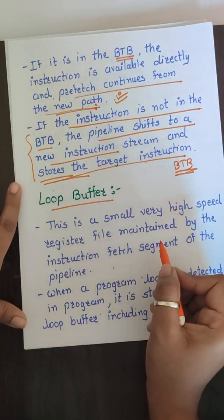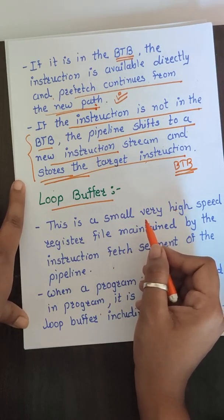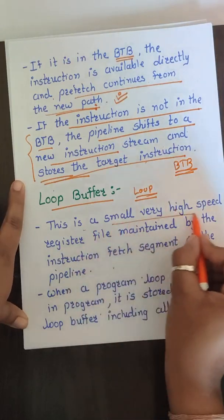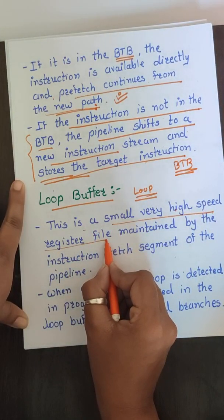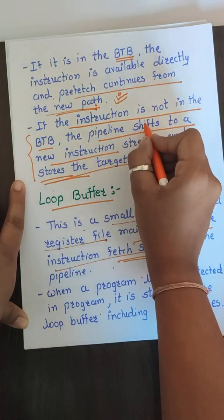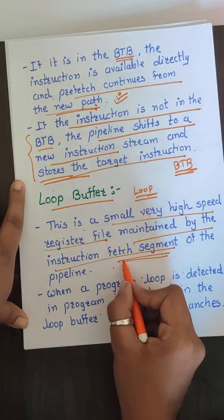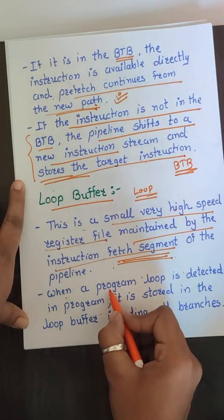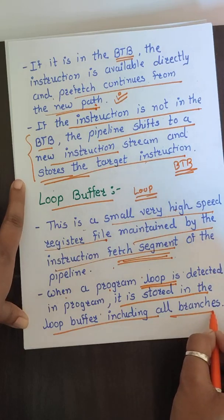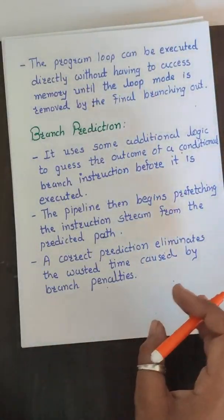The next option is the loop buffer, which is a variant of the Branch Target Buffer. While BTB is used for any kind of branch, the loop buffer is especially targeted to loop programs. The loop buffer is a small, very high-speed register file maintained by the instruction fetch segment. When a loop is detected in a program, it is stored in the loop buffer including all its branches.